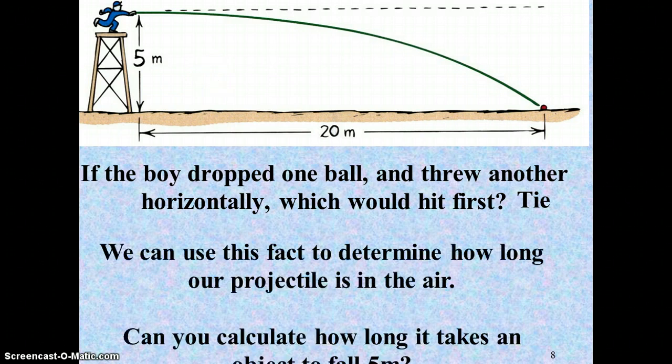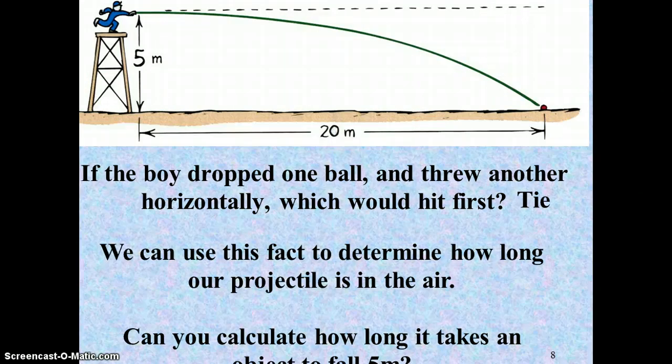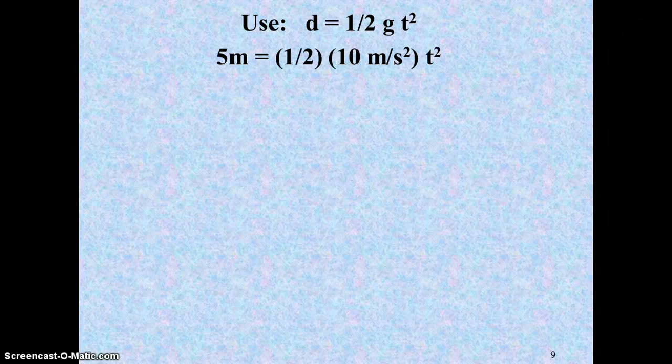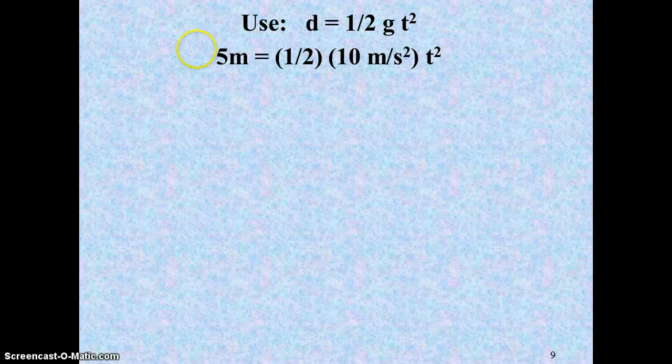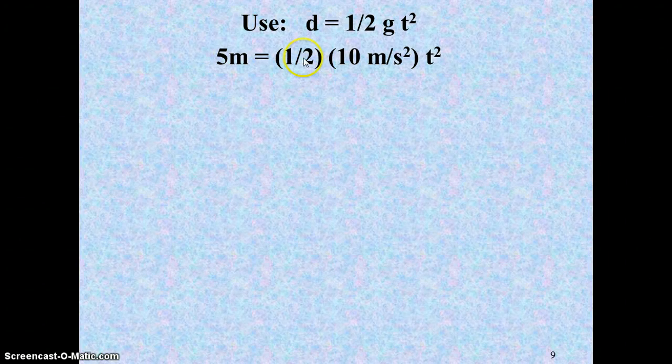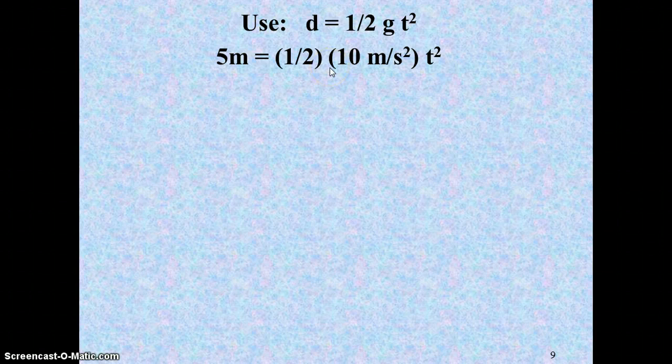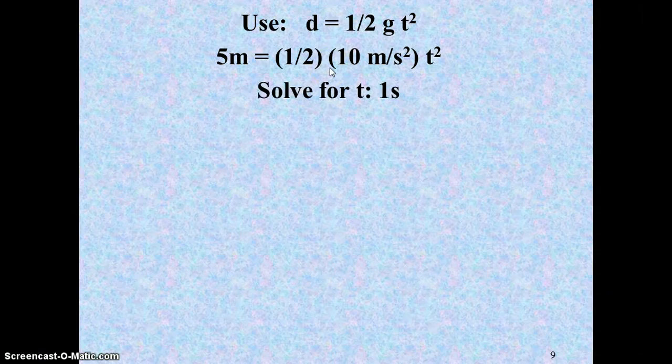Then it simply becomes a free-fall problem at the beginning here. We know the distance of fall is 5 meters. We know the distance is going to be found by doing 1 half of g times t squared. 1 half of 10 is 5. 5 divided by 5 is 1. The square root of 1 is 1. And this thing would take exactly 1 second to hit the ground.